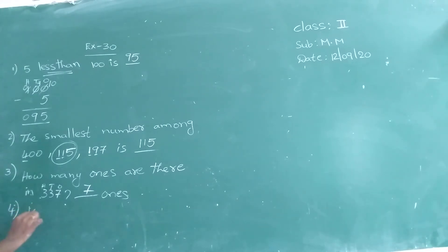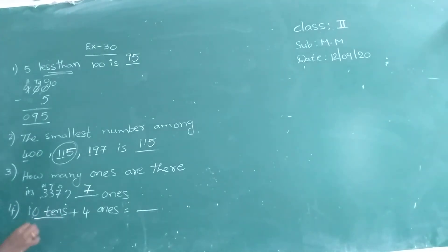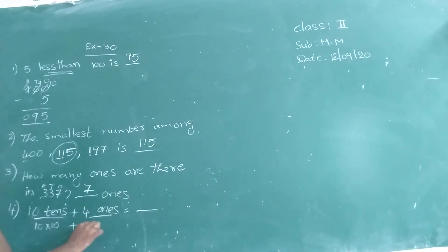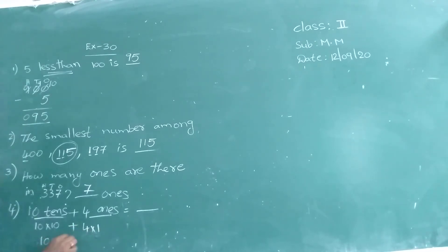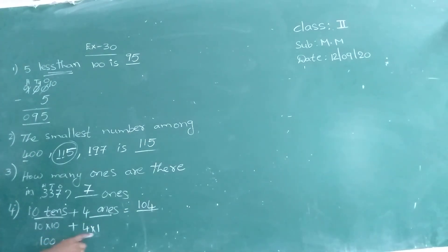10 tens make 100. Plus 4 ones. So 100 plus 4 ones is there. 10 tens means 100, and 4 ones means 4. So 100 plus 4 is 104.